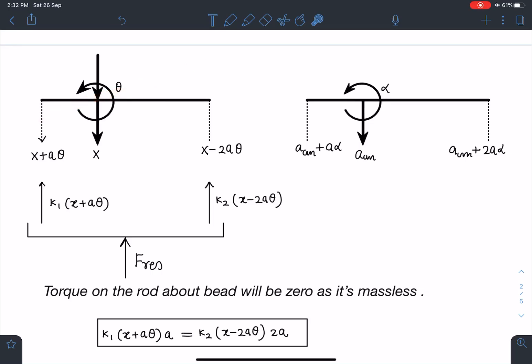Now this is the extra compression which spring k₁ is going to feel, so the spring k₁ is going to apply a force of k₁(x + a·theta) in upward direction.